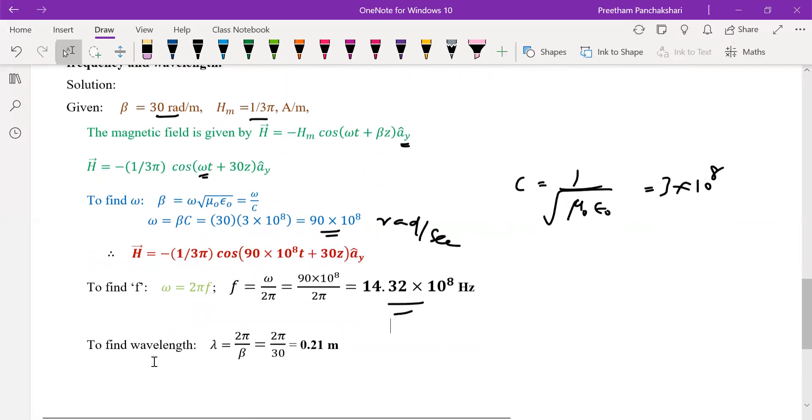Next, it is also required to find wavelength according to the problem. So λ is equal to 2π by β, 2π by 30, giving 0.21 m.